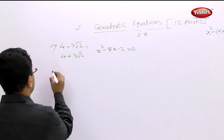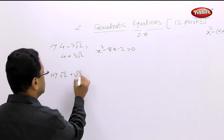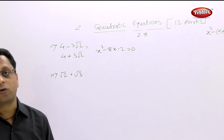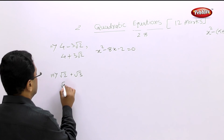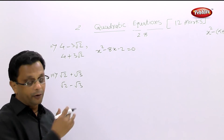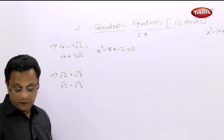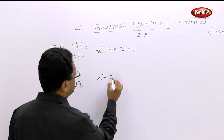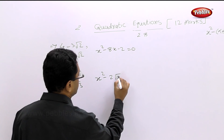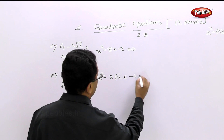Third example: the one root given is root 2 plus root 3. What will be the second root? The conjugate: root 2 minus root 3. Pause the video and solve this. The answer is x squared minus 2 root 2 times x minus 1 equal to 0.